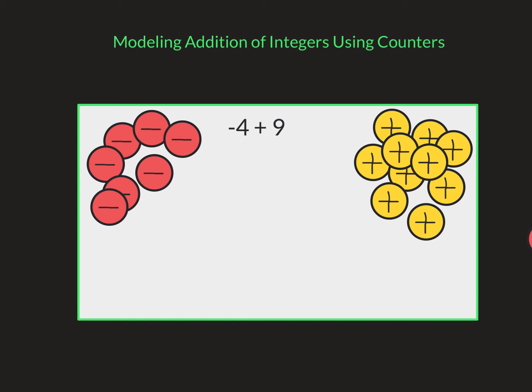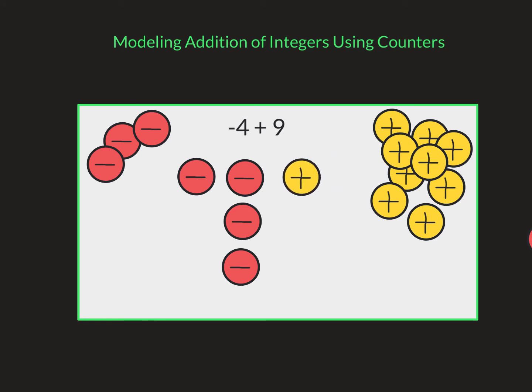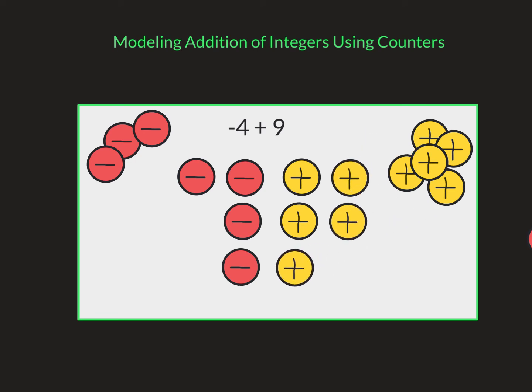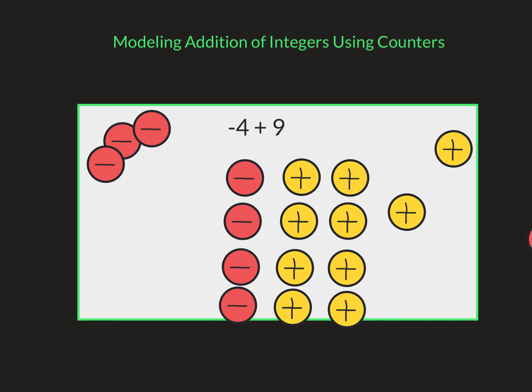All right, so hopefully you've tried this on your own. I'm going to start with negative four. So I have four negative chips. That's going to represent my negative four. You can put them however you want. And then I have nine positive chips. Two, three, four, five, six. I'm going to make a little difference. I'll move that down there. Seven, eight, and nine.